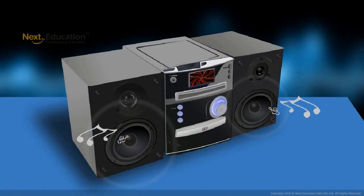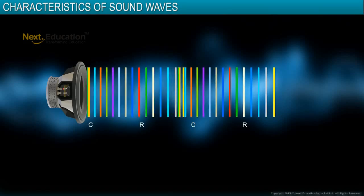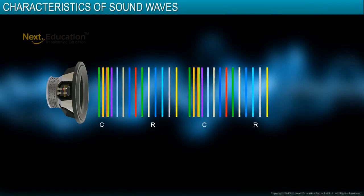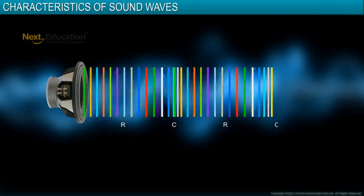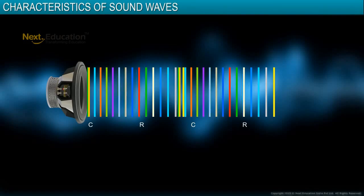In this module, you will learn about the characteristics of sound waves. A complete sound wave can be considered as the repetition of the pattern of a single wave. That is, it consists of a number of compressions and rarefactions in succession.